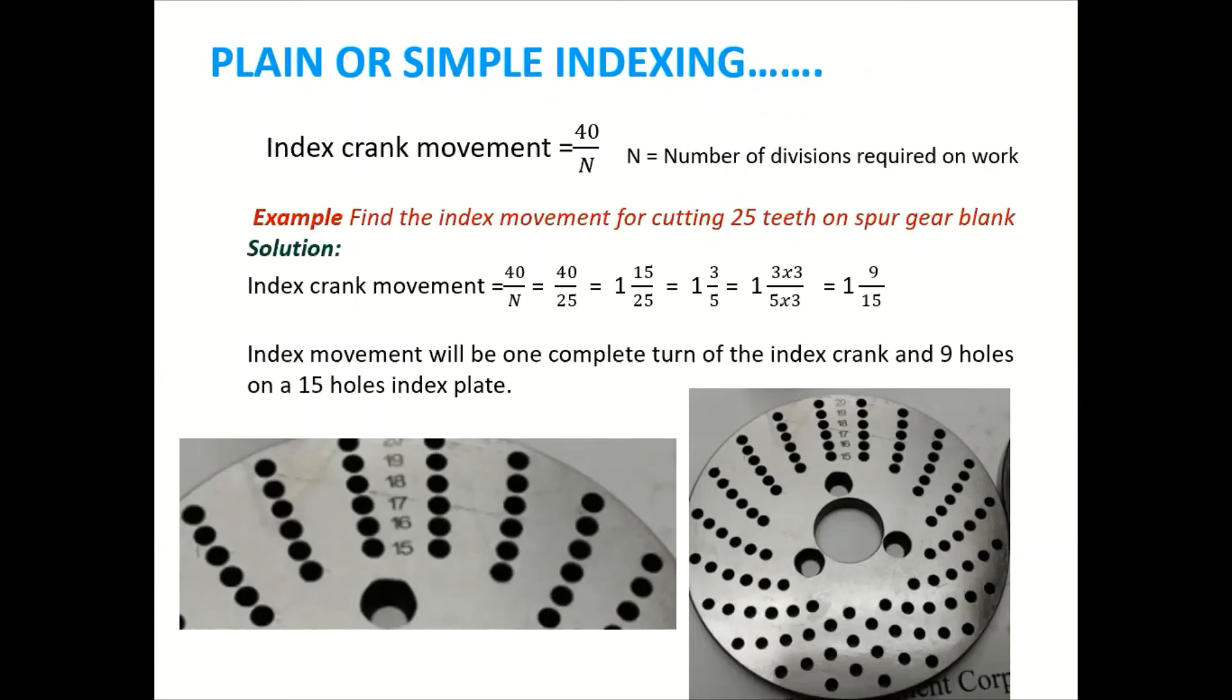So like that, again, I had divided 15 by 25 by 5. So 5 threes are 15, 5 fives are 25. So like that, we are getting 3 by 5.